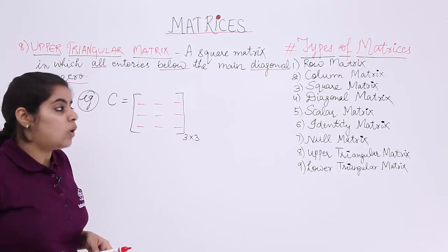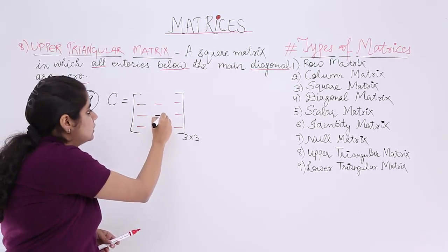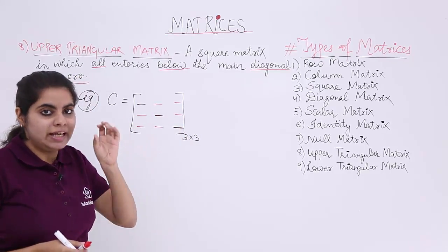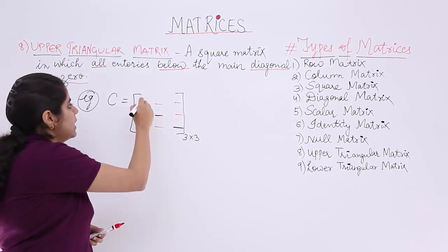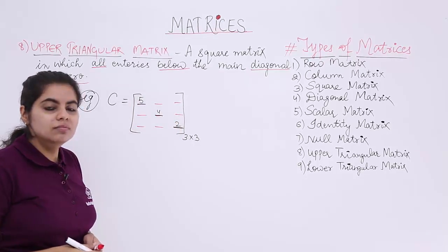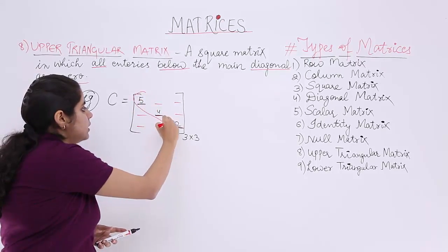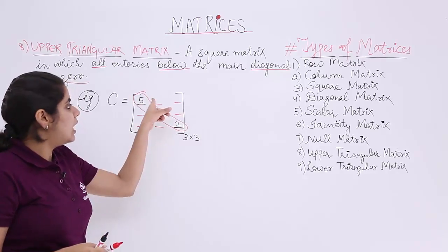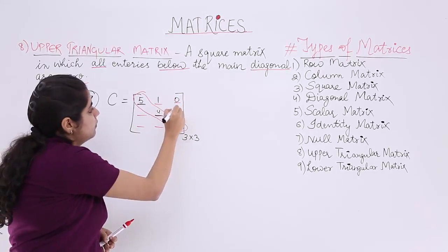Now what will be the diagonal entries? The diagonal entries are a11, a22, a33. Suppose these diagonal entries are 5, 4, 2 and the elements above the diagonal, if this is the diagonal comprising of 5, 4, 2, the elements above the diagonal are this region, three elements, and they are supposedly 1, 0, 2.